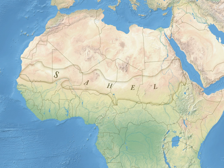The western Sahel fell to France in the late 19th century as part of French West Africa. Chad was added in 1900 as part of French Equatorial Africa. The French territories were decolonized in 1960. The eastern Sahel did not fall to the European powers but was annexed by Muhammad Ali of Egypt in 1820. It came under British administration as part of the Sultanate of Egypt in 1914. The Sudanese Sahel became part of independent Sudan in 1956, and South Sudan in turn achieved its independence from Sudan proper in 2011.